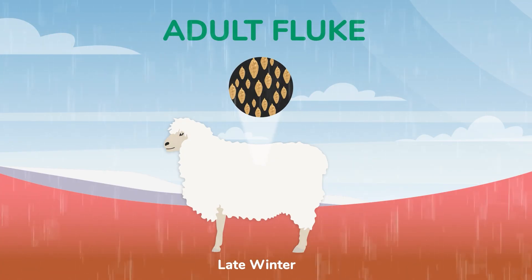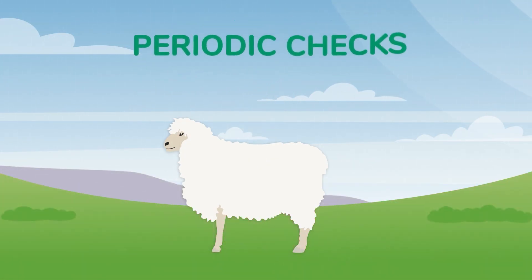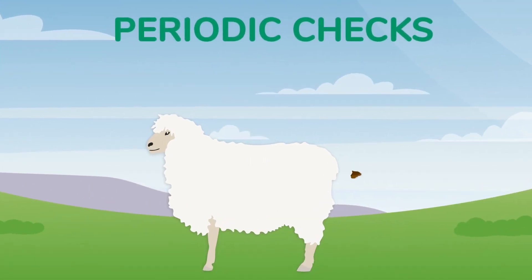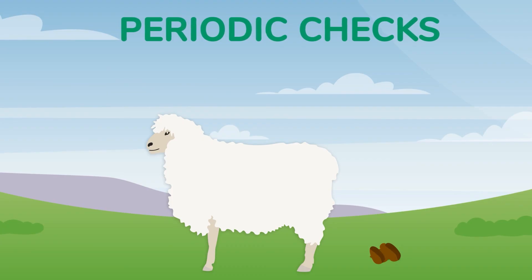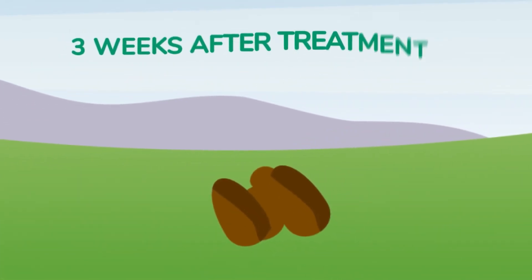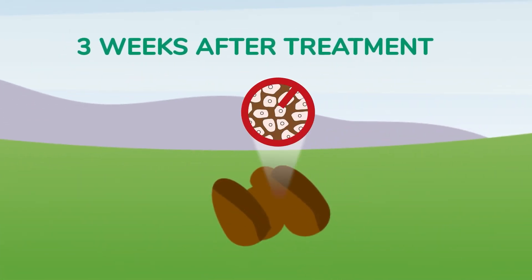After treatment, it is important that farmers periodically check that the treatment has worked by taking a fecal sample three weeks after treatment to determine if fluke eggs are still present.